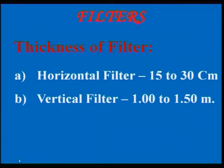Regarding the thickness of the filter, the Indian Standard recommends: for a horizontal filter, the thickness is 15 to 30 centimeters, and for a vertical filter, it is 1 to 1.5 meters. This is the general thickness criteria as per IS code.